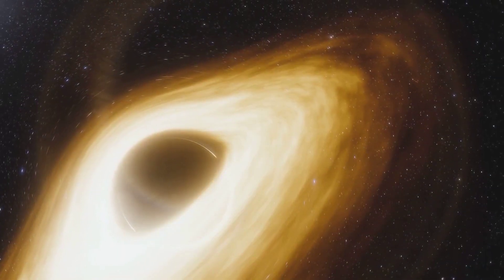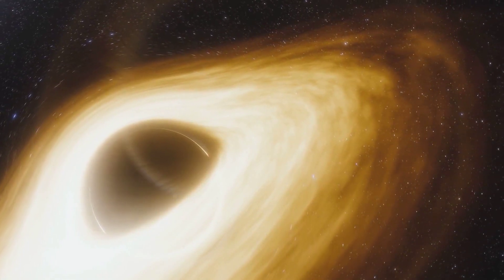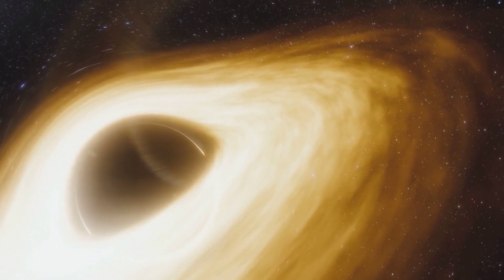This means that when light encounters a strong gravitational field, like the one near a black hole, it can actually be bent or curved. But why does this happen?